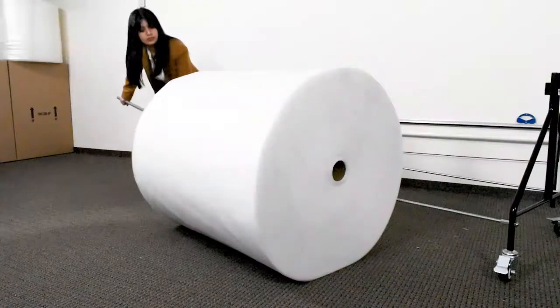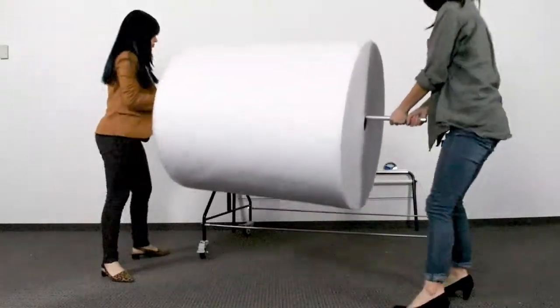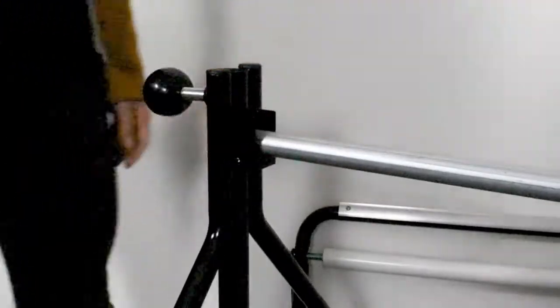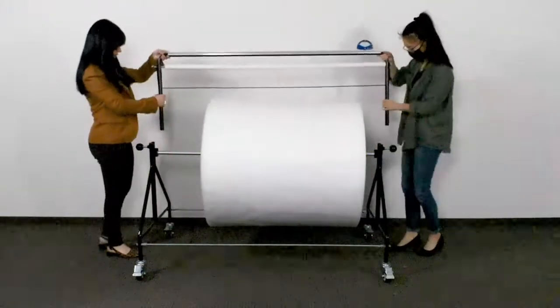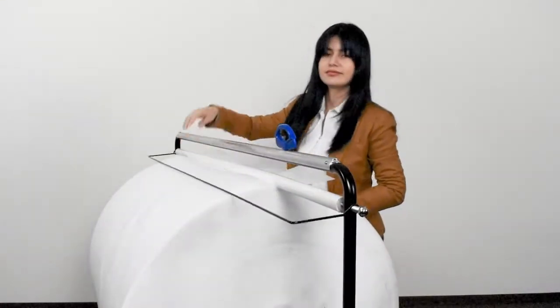To load the unit, simply slide the support tube through the core of your material. Using two people, place the pole back into the stand. Then lay on top the cutter assembly so that it rests on the material roll. Make sure the small black bar faces opposite to the end of the roll.